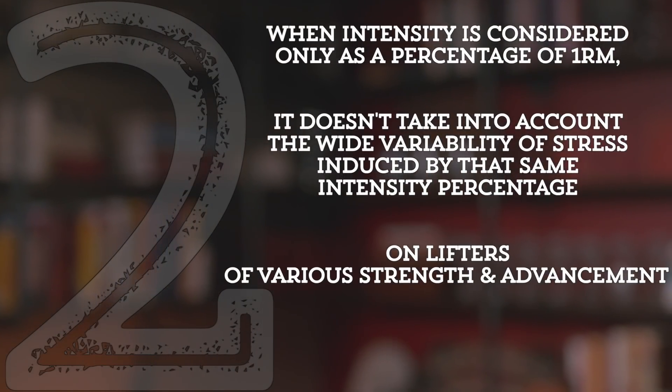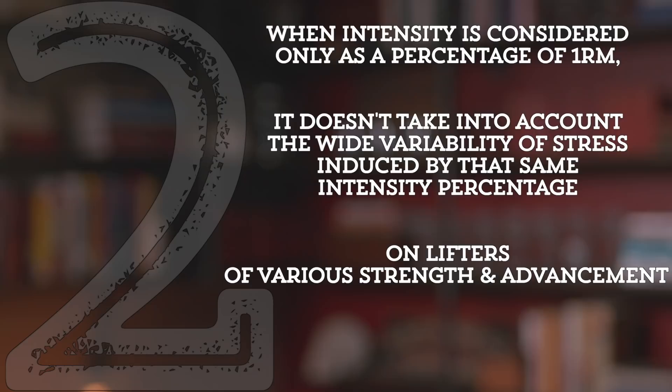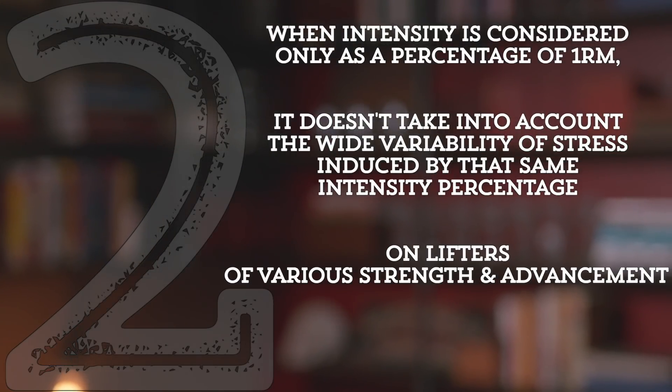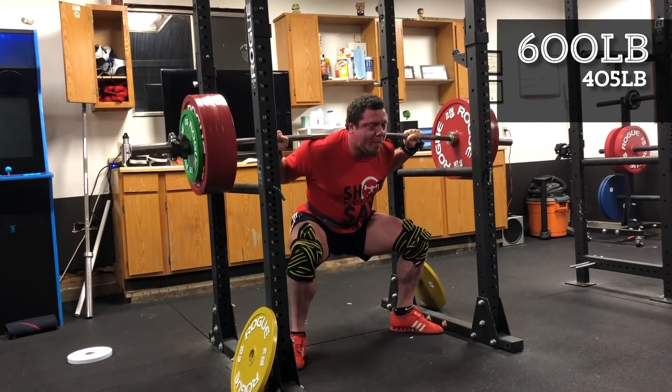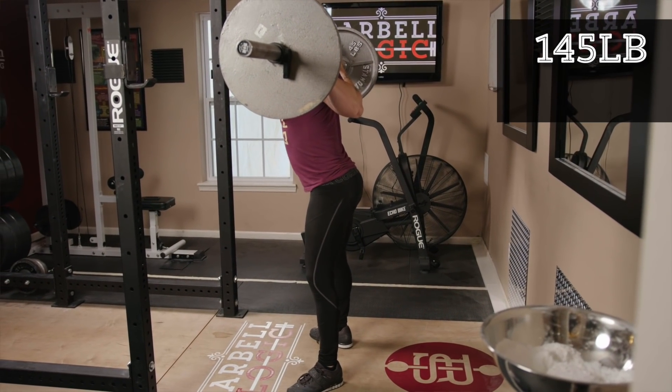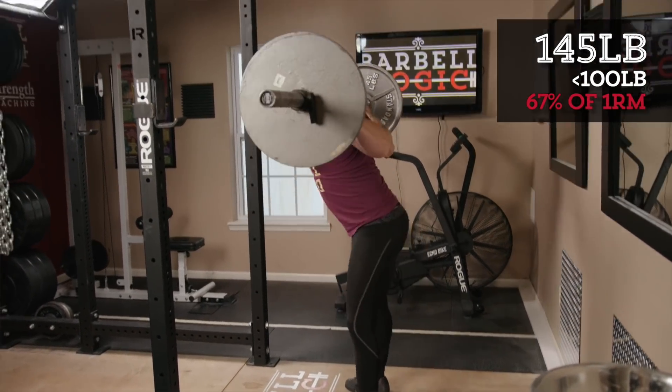Second, when intensity is considered only as a percentage of 1 rep max, it doesn't take into account the wide variability of stress induced by that same intensity percentage on lifters of various strength and advancement. For example, a lifter who squats 600 pounds can likely make progress squatting in the 405-pound range for sets, which is about 67% of their 1 rep max. But a lifter who squats just 145 pounds almost certainly cannot drive a strength adaptation squatting less than 100 pounds for sets — which is at the exact same 67% intensity. So despite being lifts in the same intensity range, there are obviously different stress events.